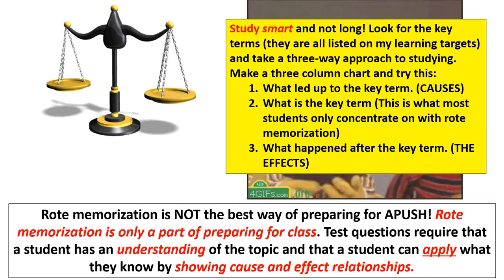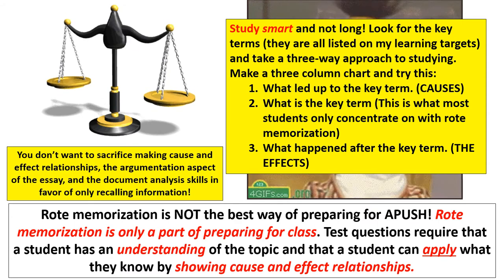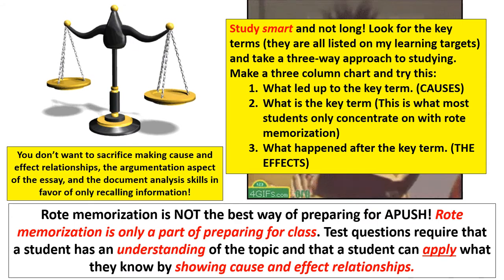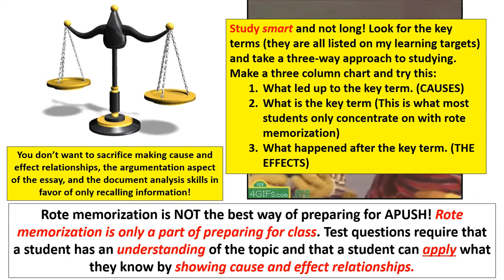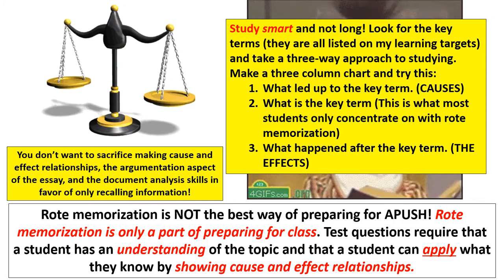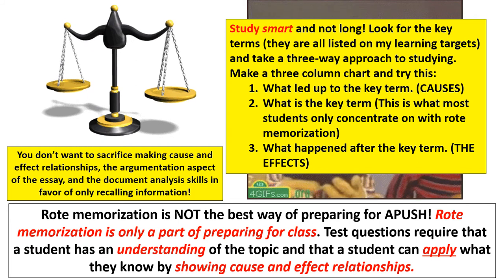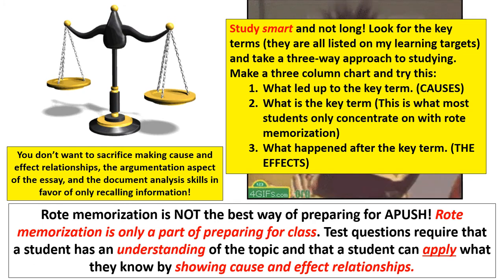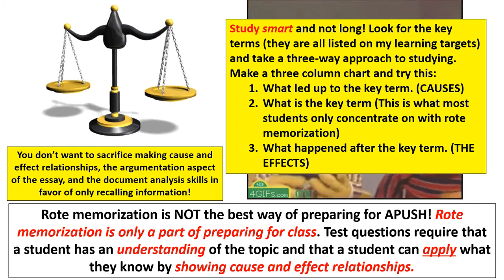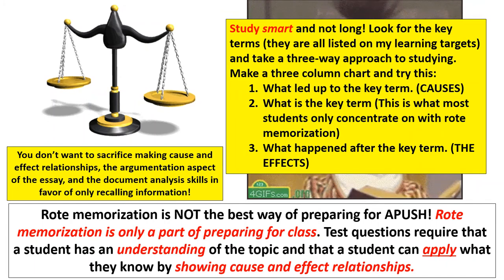A lot of students come from middle school used to simply memorizing key terms, but you don't want to sacrifice making those cause and effect relationships. The argumentation aspect of an essay in AP US History — and especially document analysis skills in a DBQ — requires more than just recalling information. For example, I'm not asking you to tell me the story of the Civil War. I want you to tell me why the Civil War was inevitable, arguing why it couldn't have been stopped. There's an important difference between the two.